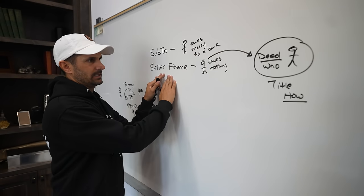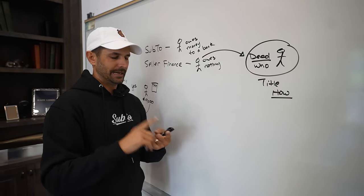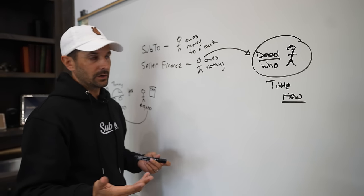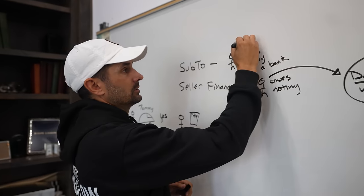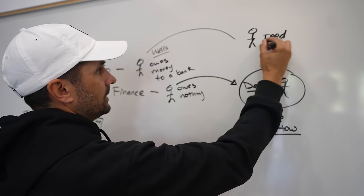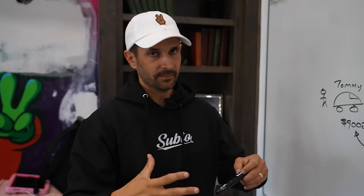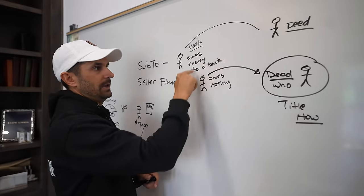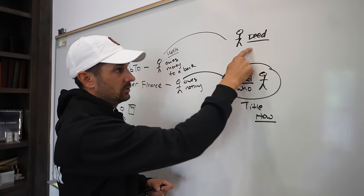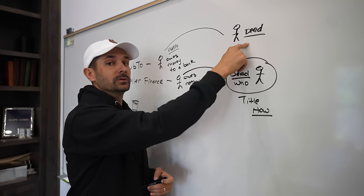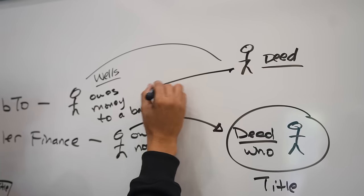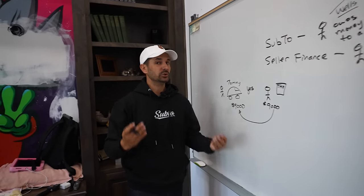In seller finance, the seller gives you the deed — you're the owner. You get the tax benefits, the appreciation, the depreciation, all that. You make payments to the seller based on whatever agreement. Same thing in subject-to: even though the seller owes Wells Fargo money, you get the deed. The problem is Wells Fargo can say you transferred the deed from the person they gave a loan to over to someone who didn't qualify for that loan and didn't even notify them — and they want that loan paid off. That is called the due on sale clause.